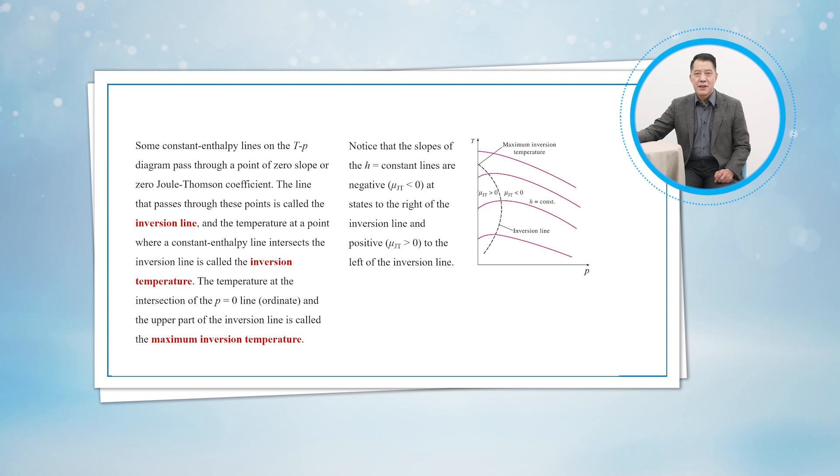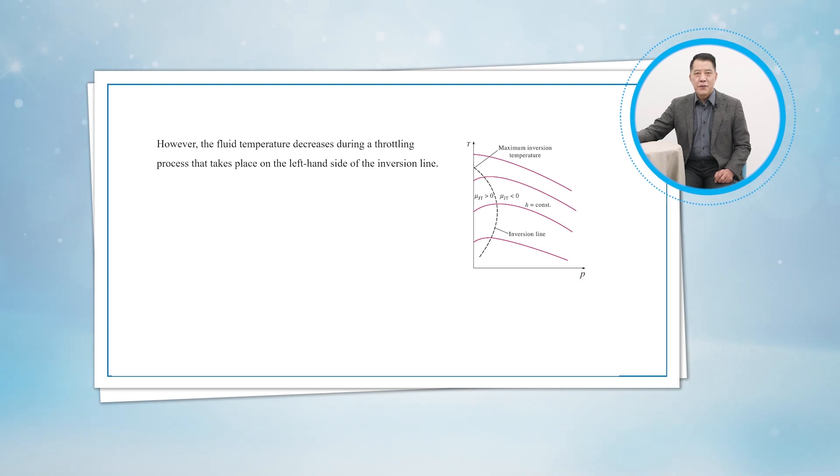Here, please notice that the slopes of the constant H lines are negative at states to the right of the inversion line. Therefore, the temperature of a fluid increases during a throttling process that takes place on the right-hand side of the inversion line. However, the fluid temperature decreases during a throttling process that takes place on the left-hand side of the inversion line. It is clear from this diagram that a cooling effect cannot be achieved by throttling unless the fluid is below its maximum inversion temperature.